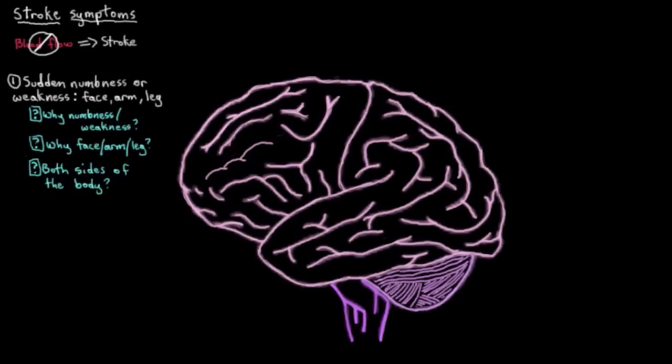So let's look at each one in turn for some possible reasons. Why would you develop numbness or weakness? Well, the numbness might happen if you developed a stroke in this area here called the primary somatosensory cortex. And as its name implies, it's the key part of your brain that allows you to feel stuff. So if it gets damaged, you might end up with a change in your sensation, for example, numbness.